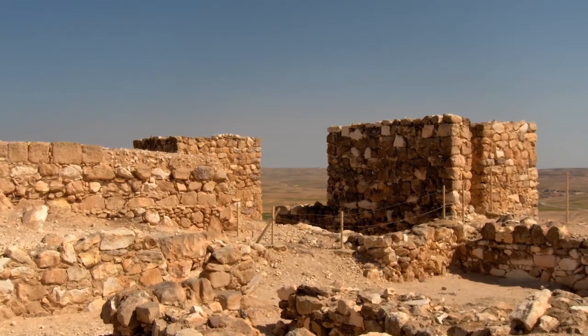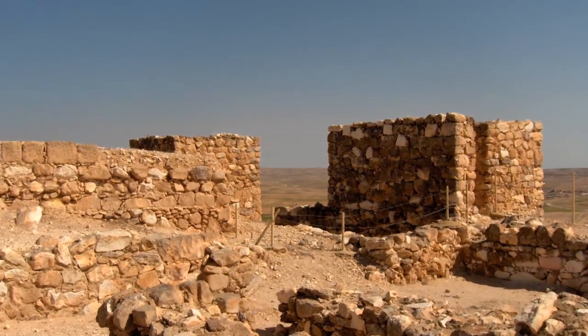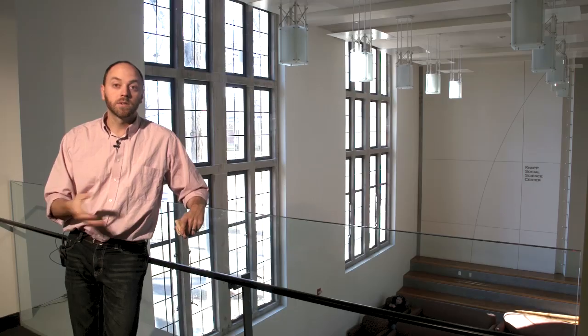And there's a lot of evidence that goes along with this. For example, we begin seeing the first evidence of permanent structures, structures that aren't mobile and meant to be moved from one place to another, from season to season, or from year to year.